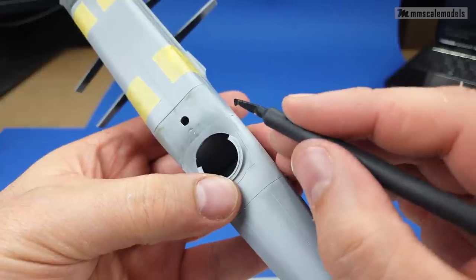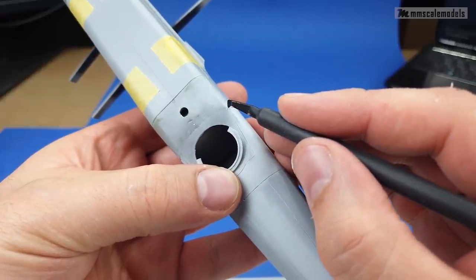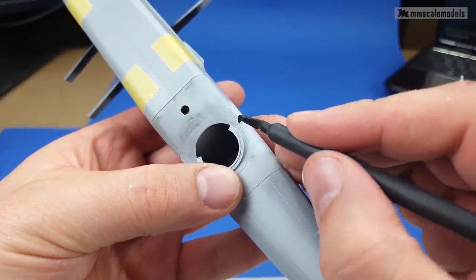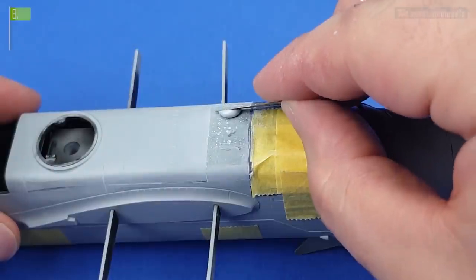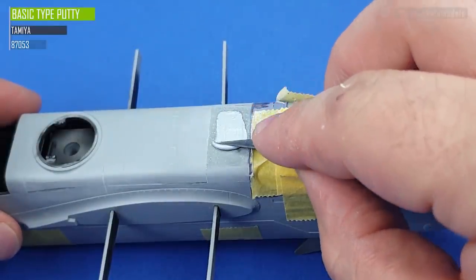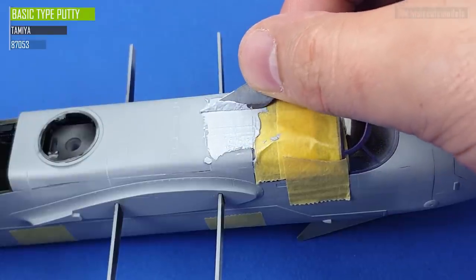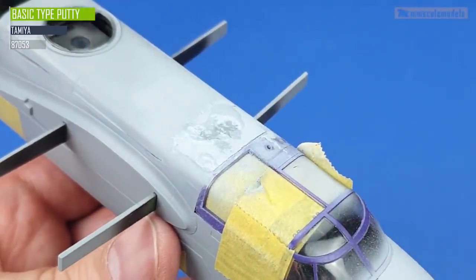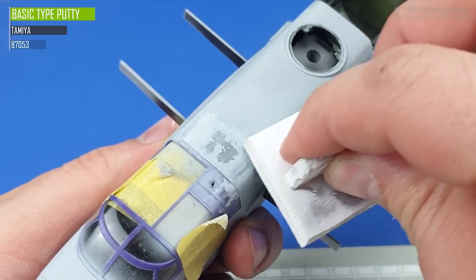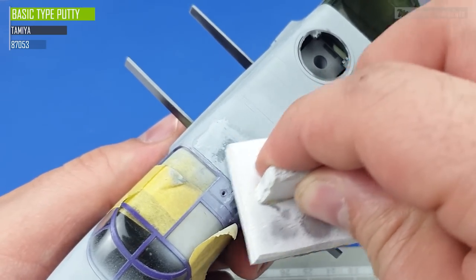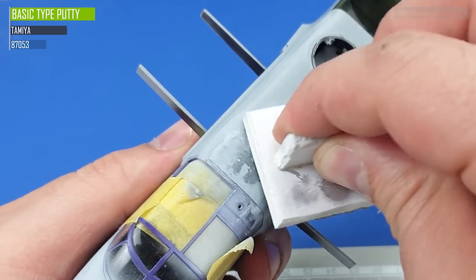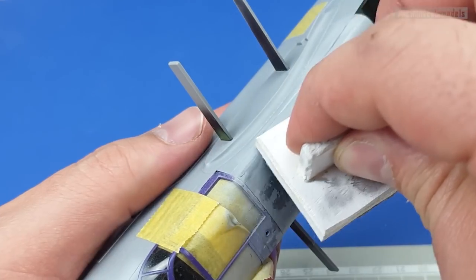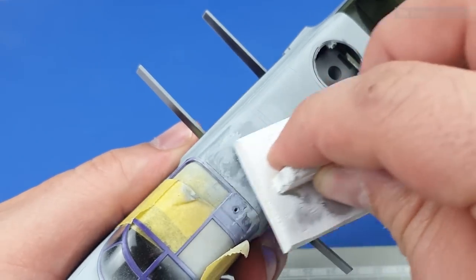The next layer of putty was the basic type from Tamiya. Luckily it dries much faster and sands much easier. Unfortunately with pin holes there is always the possibility to trap air in the hole rendering the putty application useless for the particular hole.